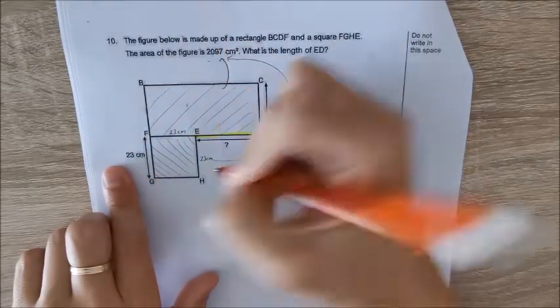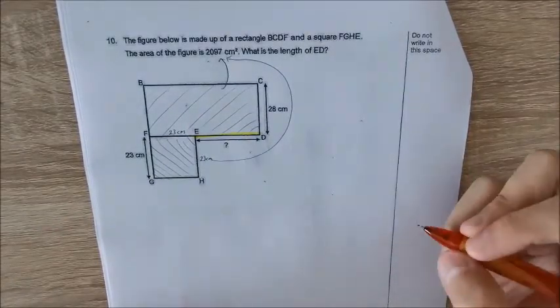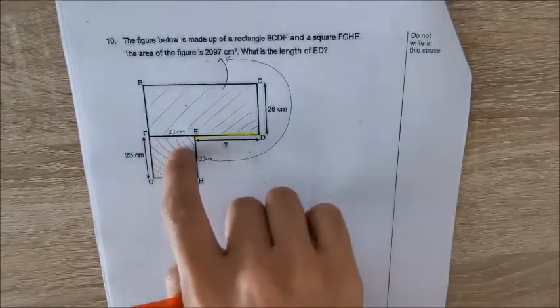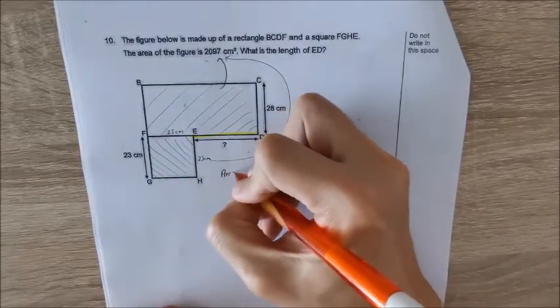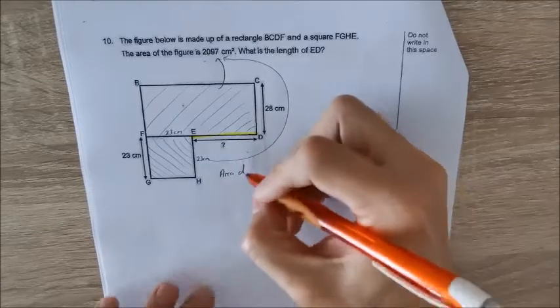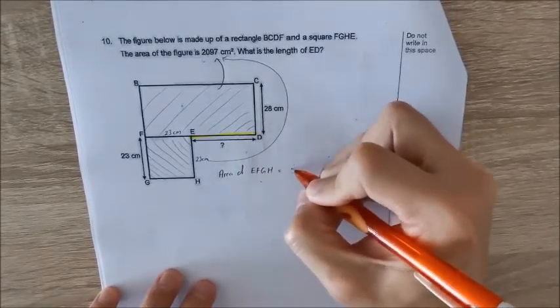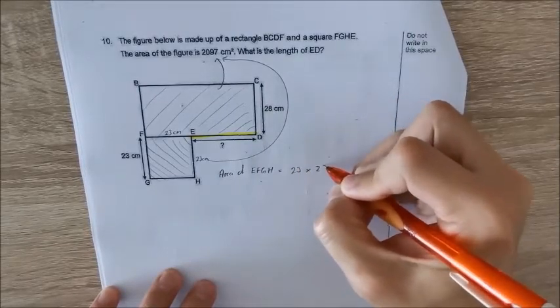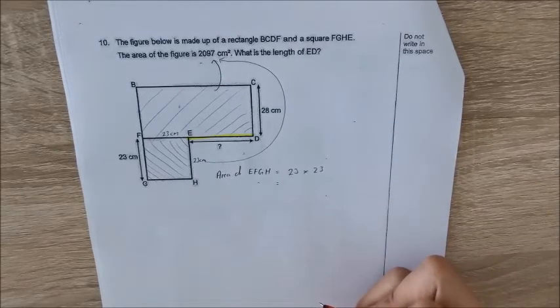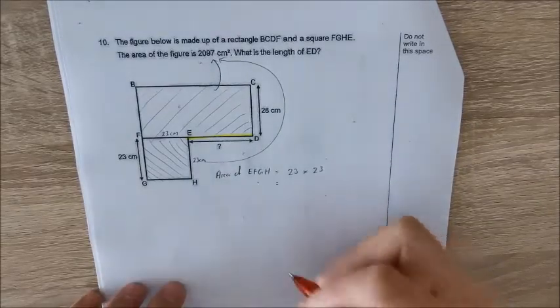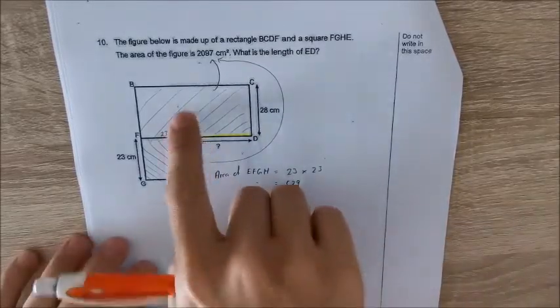Okay, first step, what we do is that we find the area of the square. How to find the area of the square? Area of the square EFGH is just 23 times 23. So 23 times 23 is 529. So we can find the area of this rectangle.